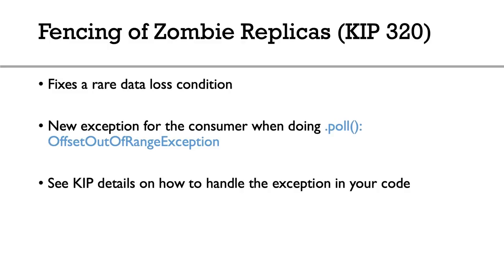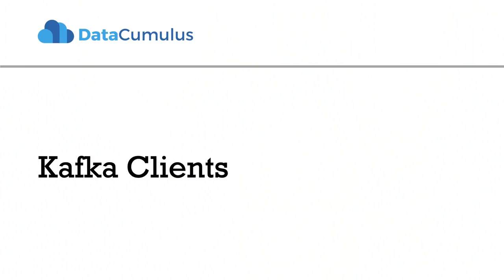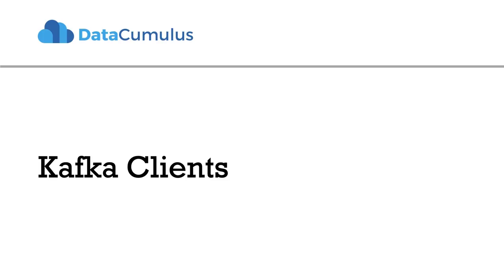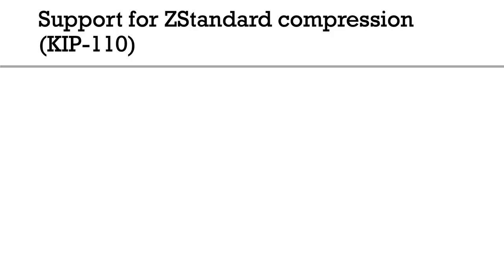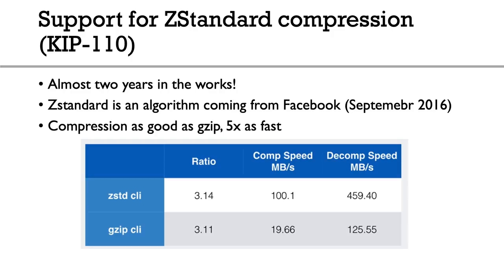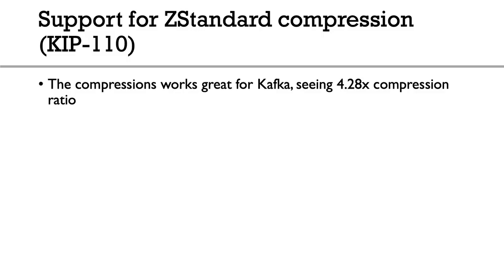For the Kafka clients, by far the biggest improvement is Zstandard compression via KIP-110. Zstandard was created by Facebook in September 2016 and has been almost two years in the works for this KIP. The compression ratio on the first pass is as good as gzip, but the compression and decompression speed is five times faster than gzip — that's huge.